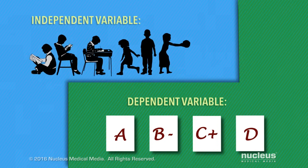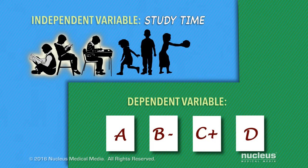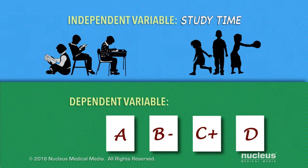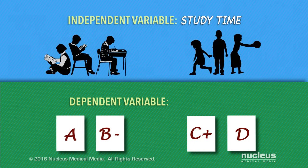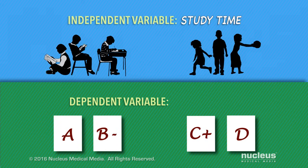You're expecting test grades will be affected. In this experiment, the independent variable is the study time, and the dependent variable — the thing you're measuring or going to observe — is the test grades.